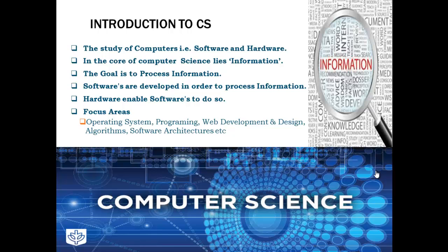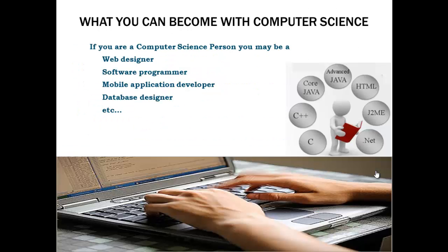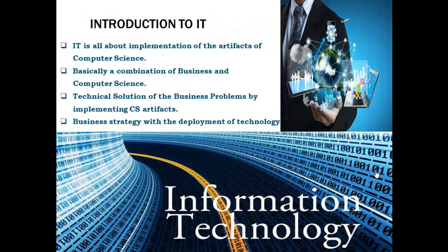Now let me tell you what you can become if you are associated with the field of computer science. You may become a web designer, software programmer, and these fields are subdivided further. For software programming, there are different programming languages using which software is developed — C++, Java, Advanced Java, Core Java, HTML, J2ME, .NET, C#, PHP, and so on. So that was about computer science.